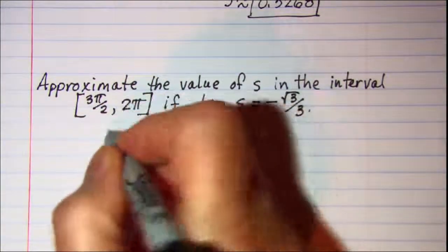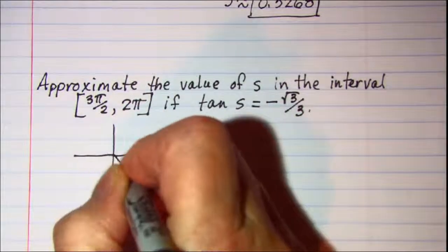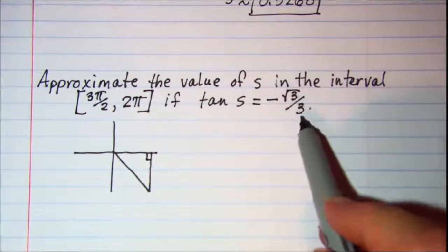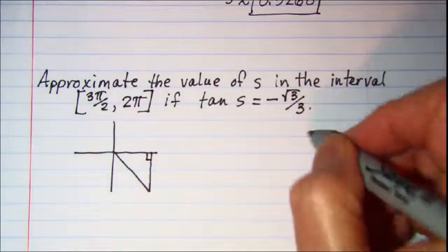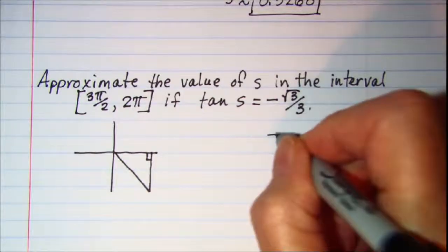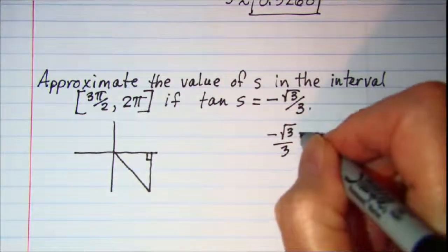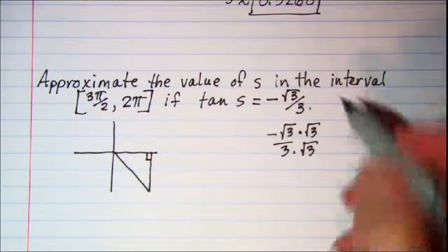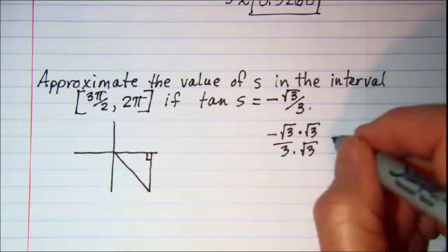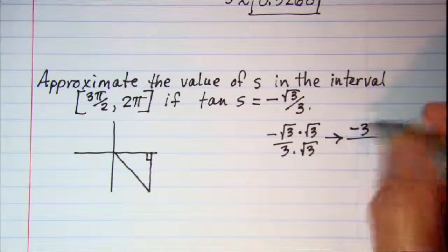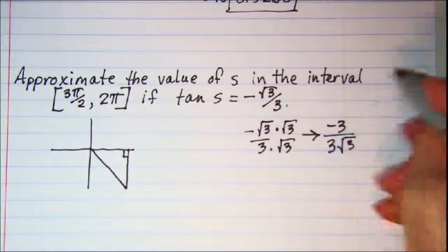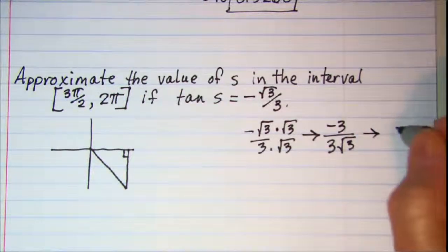We are looking for an angle in quadrant 4, so I'm drawing my reference triangle. Also, this tangent ratio — I'm going to un-rationalize it. Starting with negative root 3 over 3, multiplying top and bottom just like rationalizing the denominator, we get negative 3 on the numerator and 3 root 3 on the denominator. The 3 over 3 simplifies to 1, so we're looking at a tangent ratio of negative 1 over root 3.